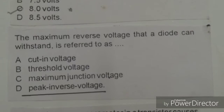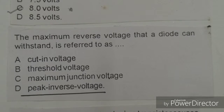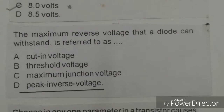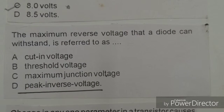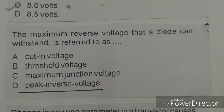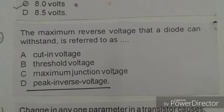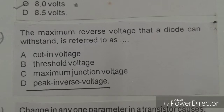Next objective: The maximum reverse voltage that a diode can withstand is referred to as. Options given: cut-in voltage, threshold voltage, maximum junction voltage, peak inverse voltage. The right answer is D, peak inverse voltage.